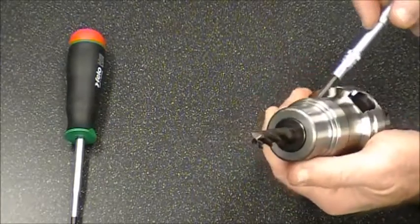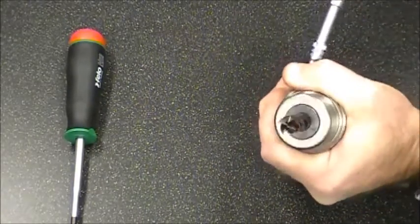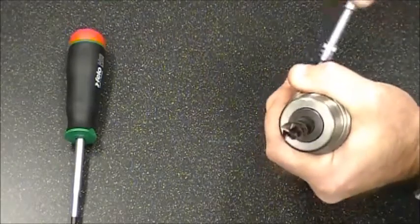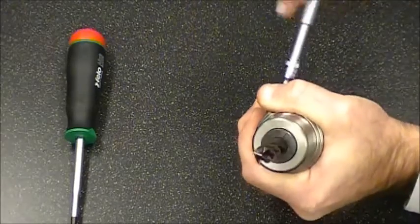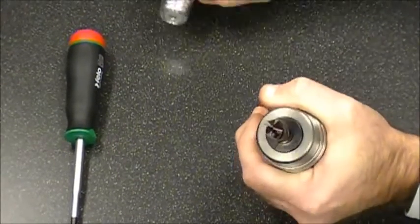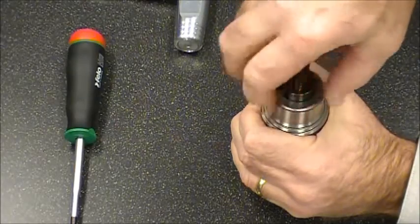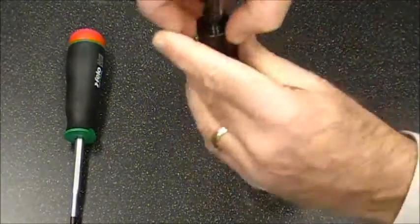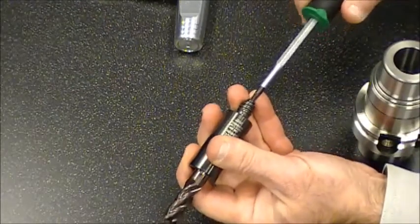We simply loosen the clamping sleeve and then unscrew the clamping sleeve and end mill from the tool holder. Take tension off the axial link setting screw, just back it off about a turn.